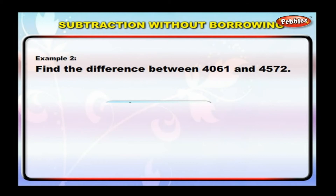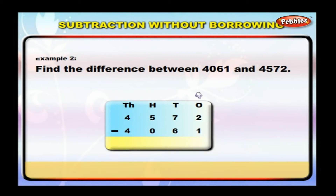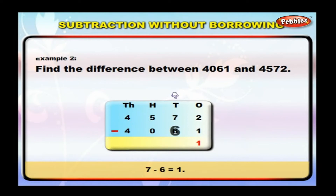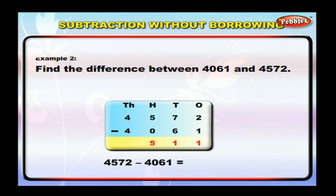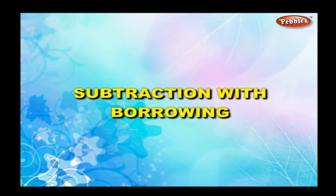Now arrange them in a column. Four thousand five hundred and seventy-two on top. Subtract ones: two minus one is equal to one. Subtract tens: seven minus six is equal to one. Subtract hundreds: five minus zero is equal to five. Four thousand five hundred and seventy-two minus four thousand sixty-one is equal to five hundred and eleven.